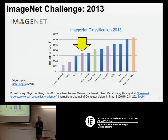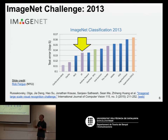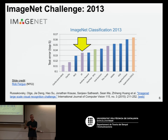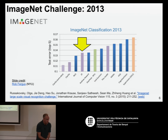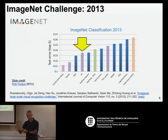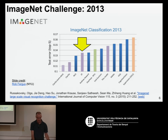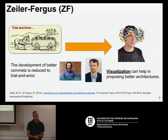In 2013, there was another competition, and again the winner improved the results of AlexNet. It was based on convolutional neural networks — networks where many of the layers, especially the first layers, were based on convolutions. It was a team originally from NYU, New York University, from the lab of another famous professor called Yann LeCun.